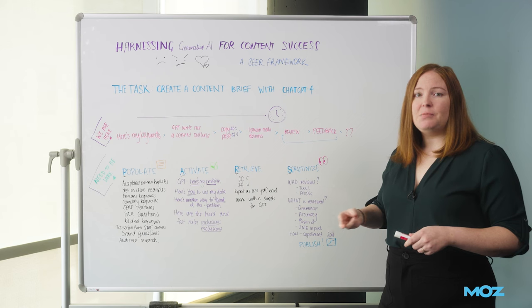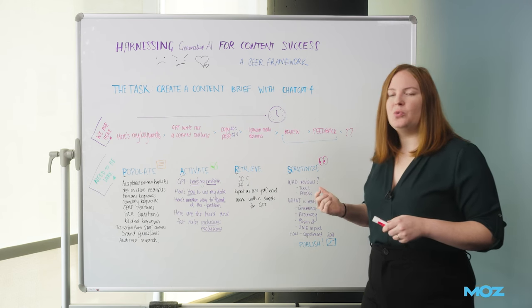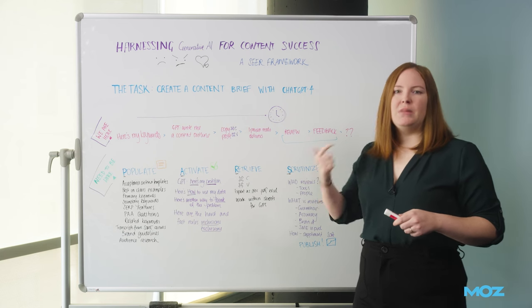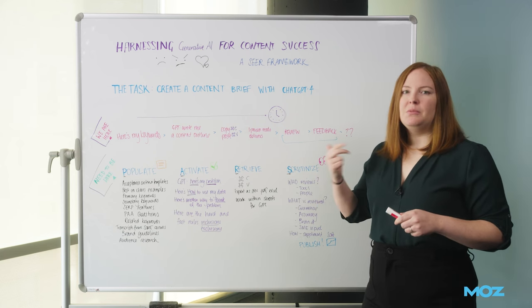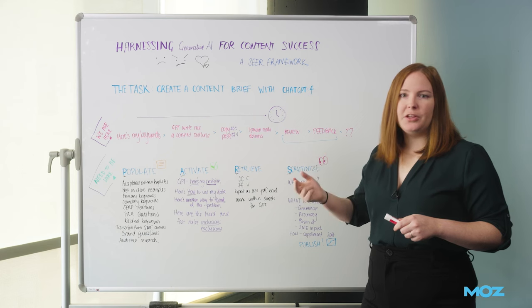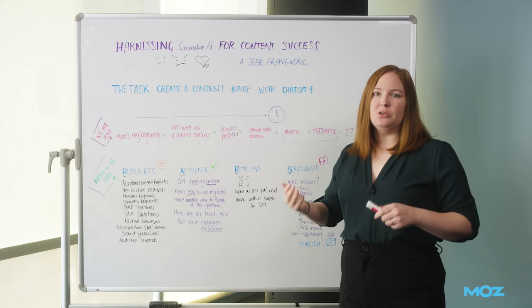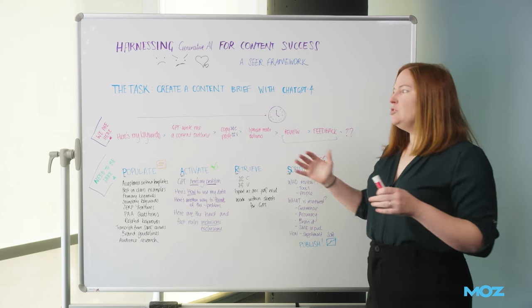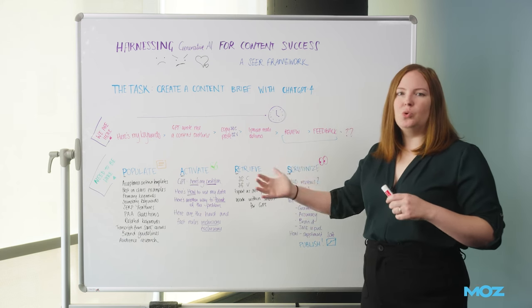The next step is going to be the what. So what exactly are you reviewing for? You want to review for everything. You want to review for grammar. Make sure the information is accurate. Make sure the brand guidelines are followed. Make sure we've got the subject matter expertise incorporated. And most importantly, make sure that the output is unique. You can be doing this with a variety of tools and people.